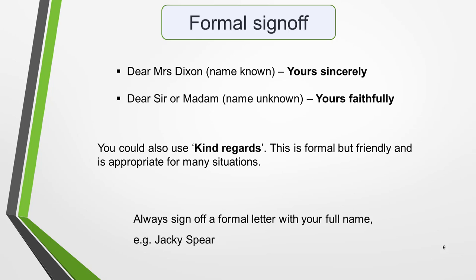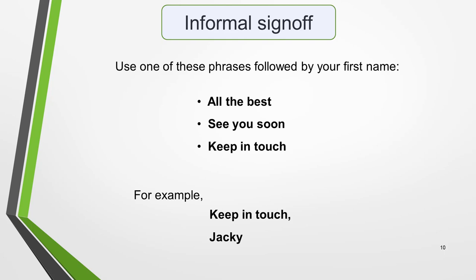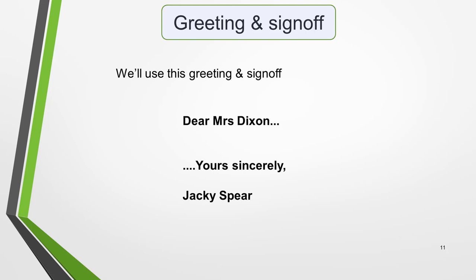Always sign off a formal letter with your full name, for example, 'Yours sincerely, Jackie Spear'. For an informal letter to a friend, use one of these phrases followed by your first name: 'All the best', 'See you soon', or 'Keep in touch' — for example, 'Keep in touch, Jackie'. For our sample letter, we'll use the greeting 'Dear Mrs. Dixon' and sign off with 'Yours sincerely, Jackie Spear'.